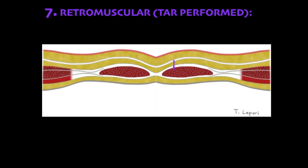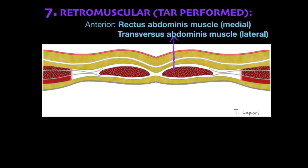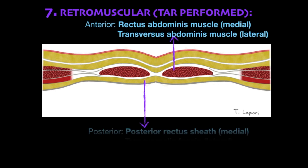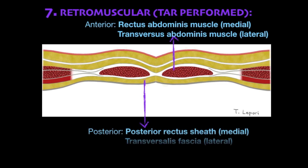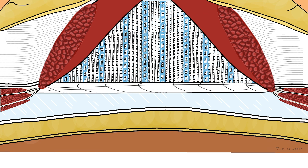The limits of the retromuscular TAR plane are anteriorly the rectus abdominis muscle and transversus abdominis muscle, and posteriorly the posterior rectus sheath and transversalis fascia. This plane is achieved via posterior component separation through transversus abdominis muscle release.